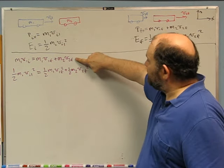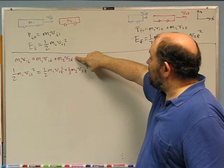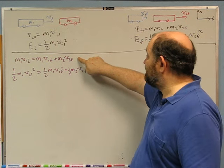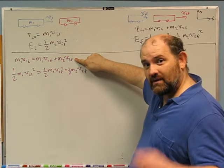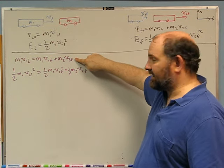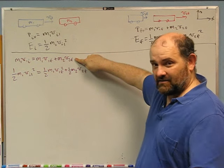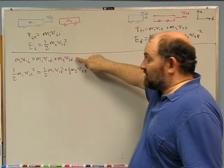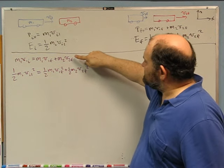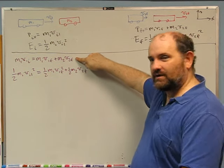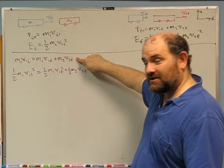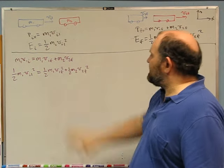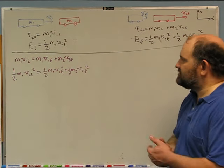Some of you in lab tried to solve one equation for v1f and plug it back in to get v2f — but if you do that with just one equation, you'll end up with v1f equals v1f, which won't be very helpful. It's also possible that two equations aren't independent — for instance, if you multiply one by two it looks different but it's really the same. These two really are independent, so it is possible to solve it.